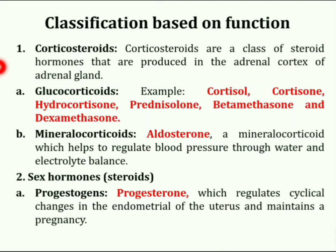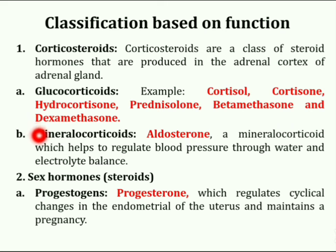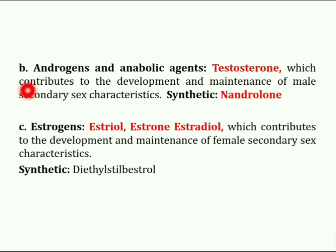Steroids are also classified based on their functions. In this classification, the different categories are: first, corticosteroids, which are further classified into glucocorticoids and mineralocorticoids. The second category is sex hormones, which are further classified as progestogens, androgens and anabolic agents, and estrogens.